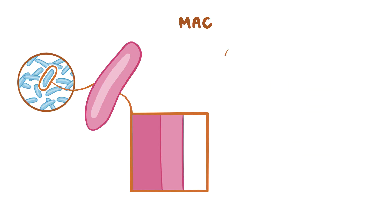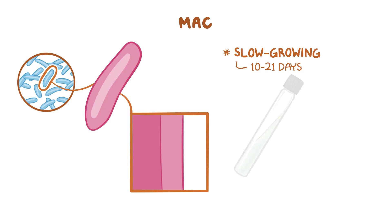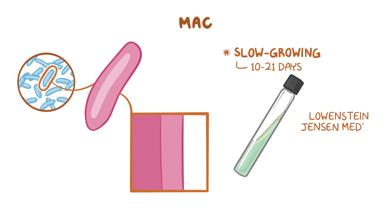MAC are slow-growing bacteria, and it typically takes them 10 to 21 days to grow on a medium called Lowenstein-Jensen.